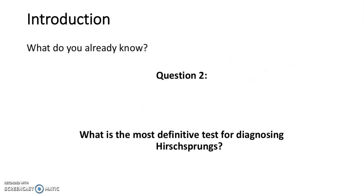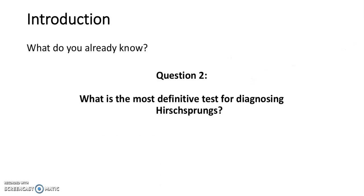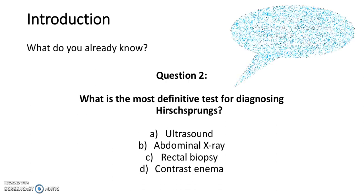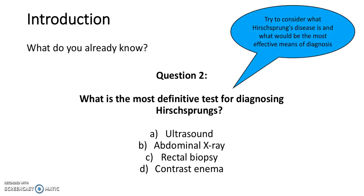Question 2: What is the most definitive test for diagnosing Hirschsprung's? A. Ultrasound. B. Abdominal X-ray. C. Rectal biopsy. Or D. Contrast enema. Try and think about what the disease is and what would be the most effective means of diagnosis. It's C — rectal biopsy.